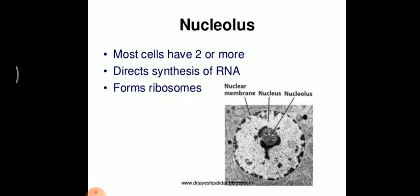Now, coming to the case of RNA — RNA is of three different types: one is mRNA (messenger RNA), one is tRNA (transfer RNA), and one is rRNA (ribosomal RNA).